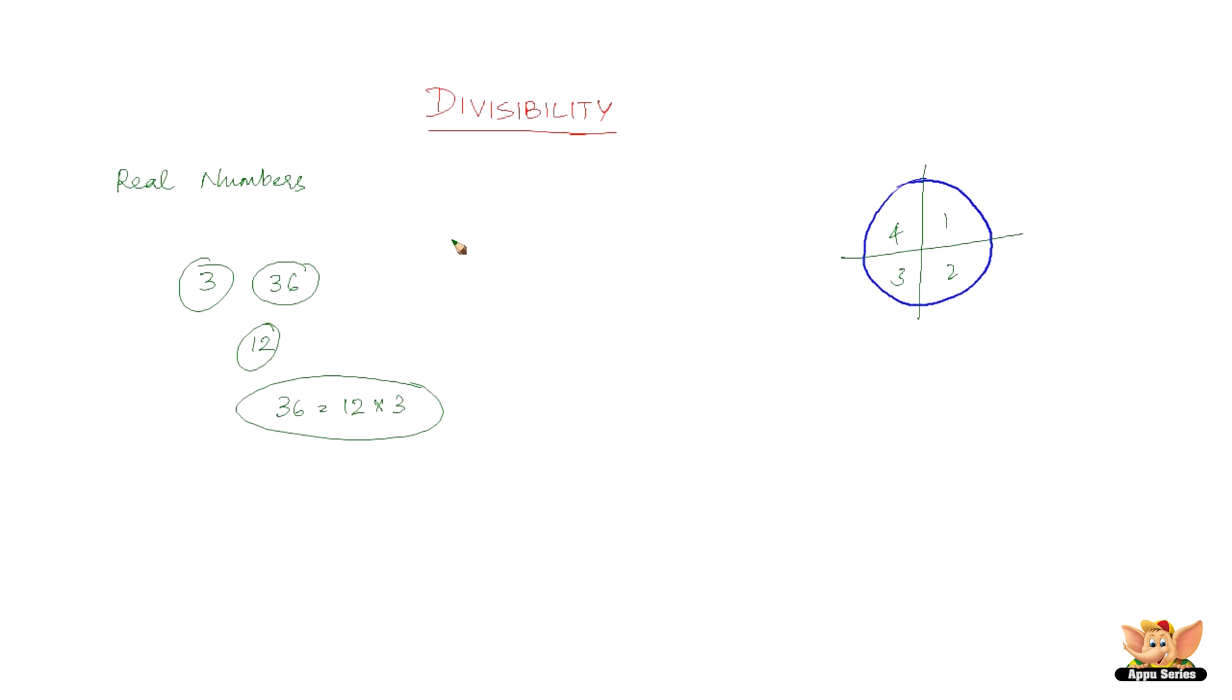So this is what is division all about. This is what we've been doing or say in some other form, say 60 divided by 5. So it is 12 times 5, 12 times 5 is 60. The remainder is 0. Now, 5 divides 60 because there is a number 12, which gets multiplied with 5 and gives you 60.